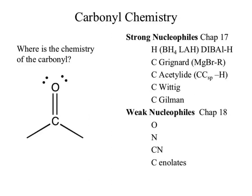So hydrogen and then carbon nucleophiles. Some of the carbon nucleophiles start to become a little bit weaker, like the Gilman and the acetylide are weaker nucleophiles, which helps us transition into the weak nucleophile chapter of chapter 18, where we look at oxygen, nitrogen, cyanide, and our enolates.